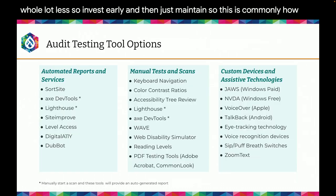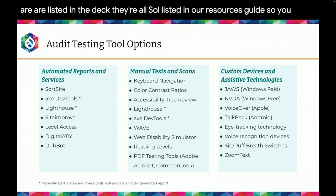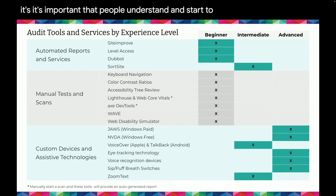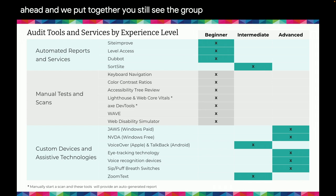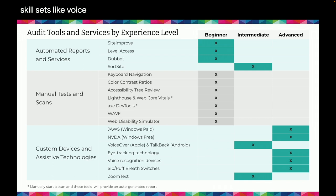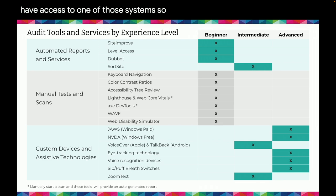This is commonly how you would see a list of tools — automated reports and services, many listed in the deck and our resources guide. We've put them into logical groupings: automated reports and services, manual tests and scans, custom devices and assistive technologies, which are the tools actual end users would leverage. Those start to move toward intermediate and advanced skill sets — like VoiceOver being more achievable, but a sip-and-puff breath switch being much more complicated, requiring access to that specific device.